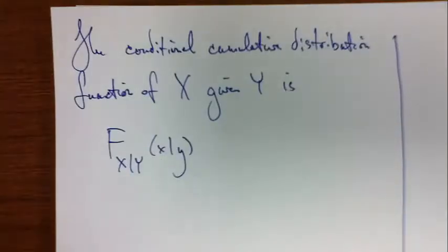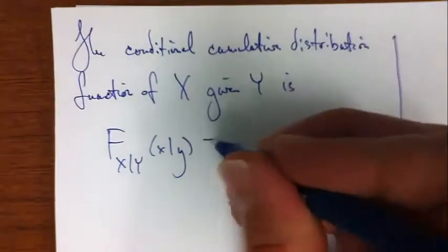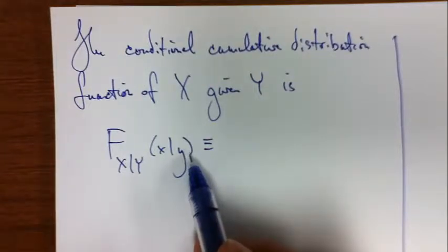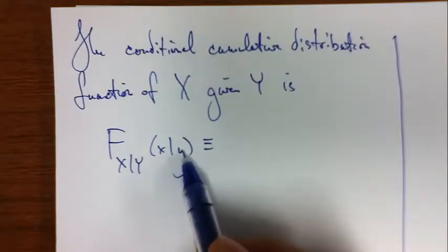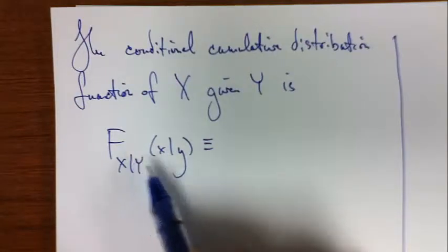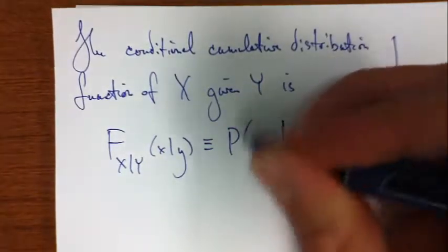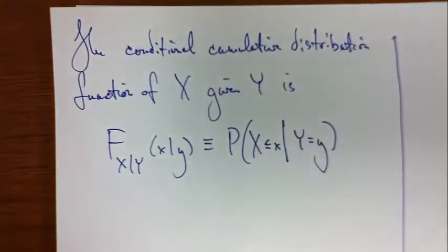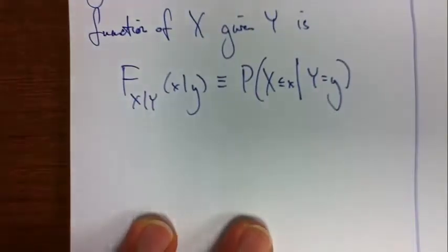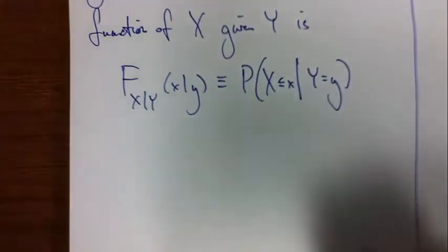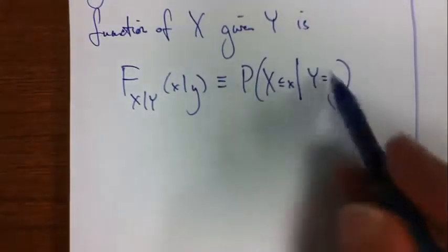So now the conditional cumulative distribution function of x given y is, what does that even mean? Here's what I think it ought to mean. If I say that the random variable y is observed to be this right here, little y, then I want to be talking about the CDF of x. That is, this needs to be the chance that given y takes on the value of little y, that x takes on a value less or equal to little x.